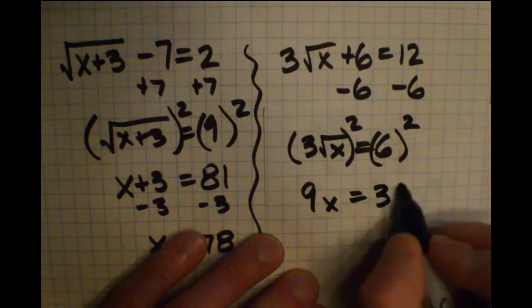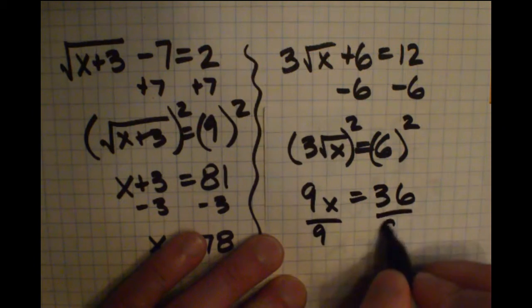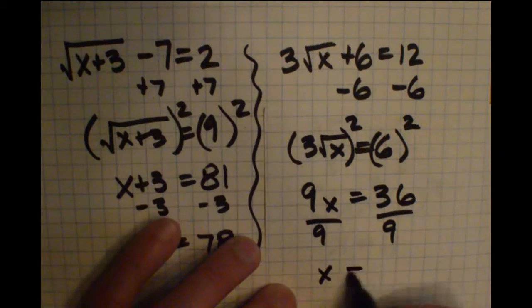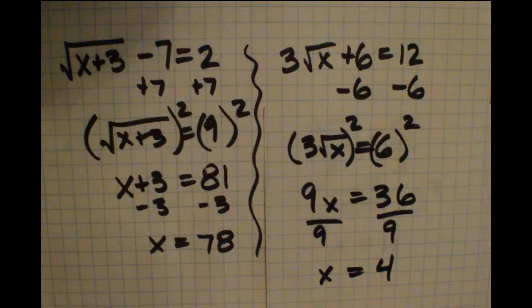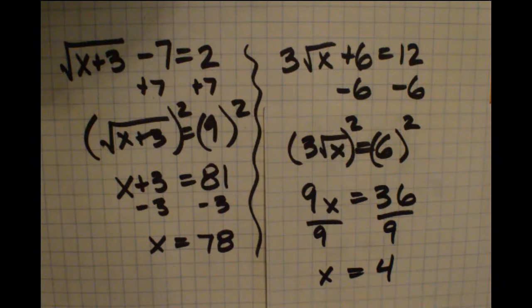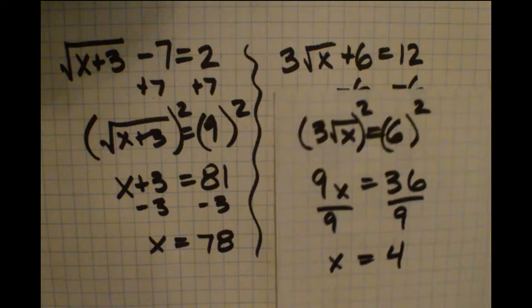On the right side, I get 36. I can now divide by 9. And I get my solution again. x equals 4. So as long as you're doing mathematically okay steps, then you are going to be in good shape.